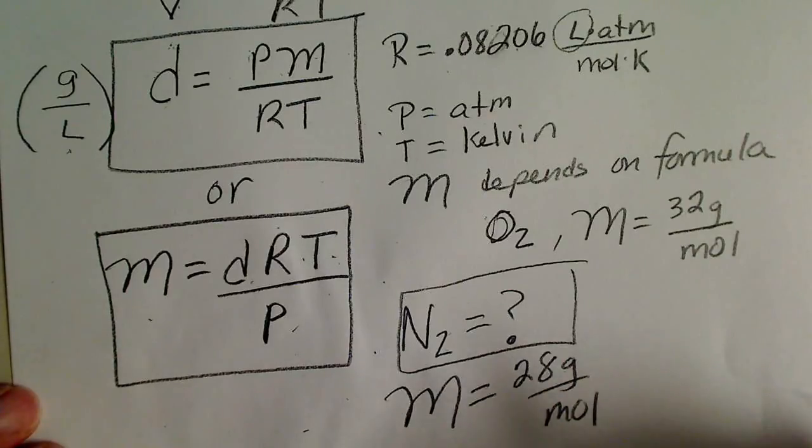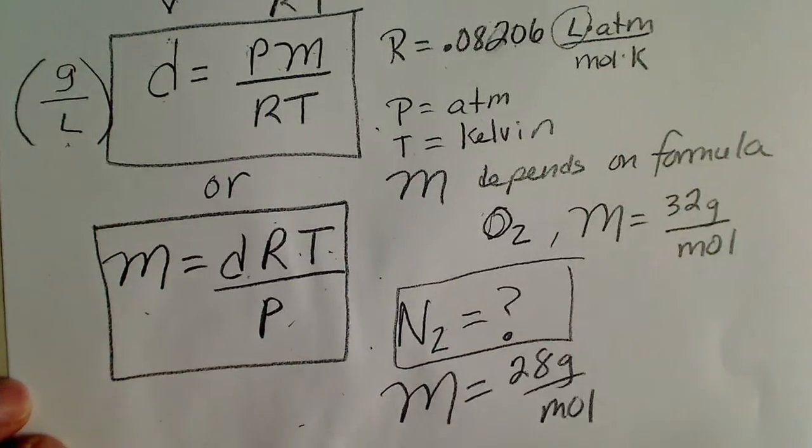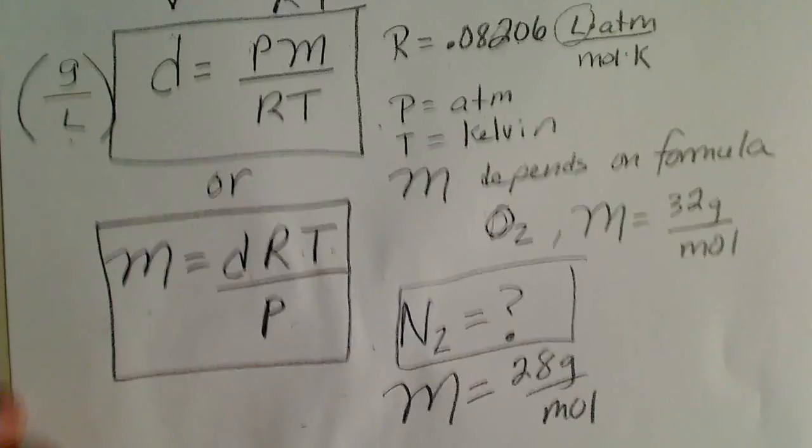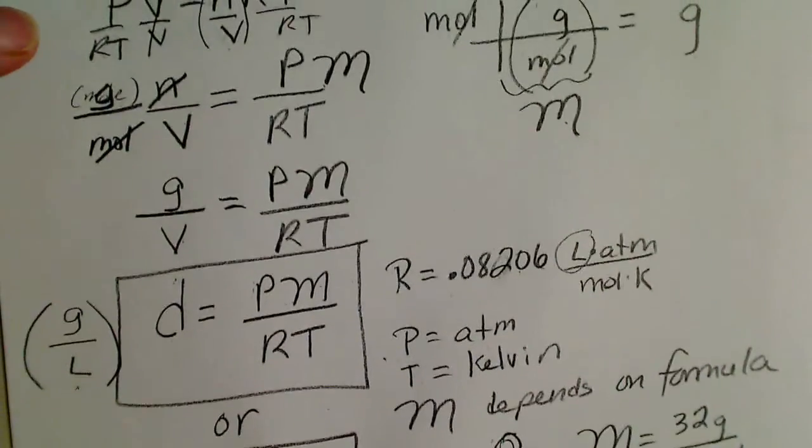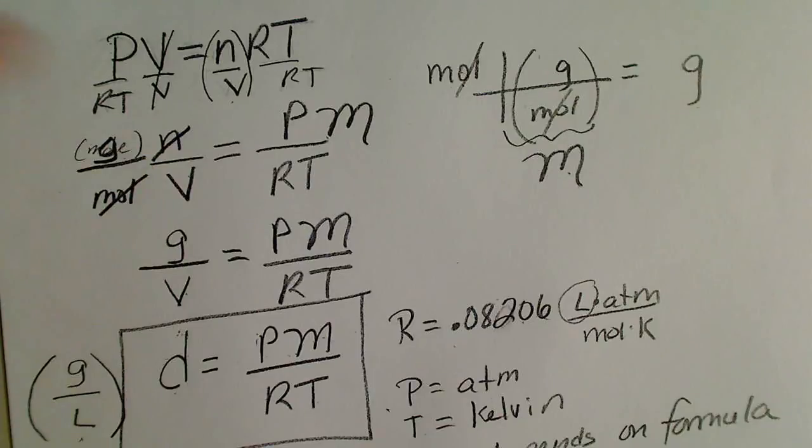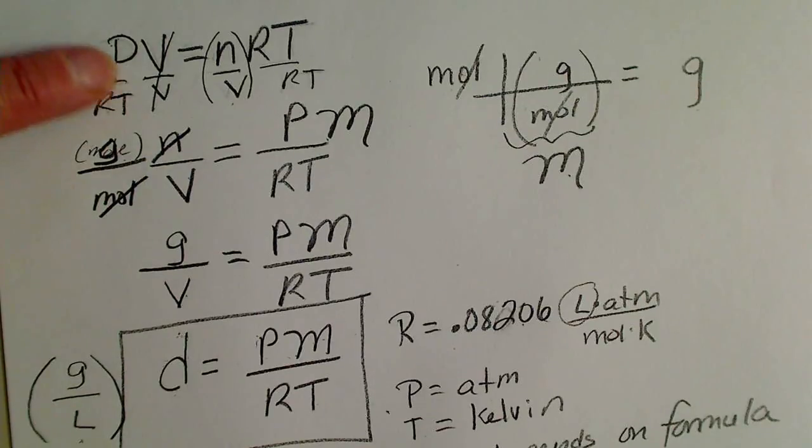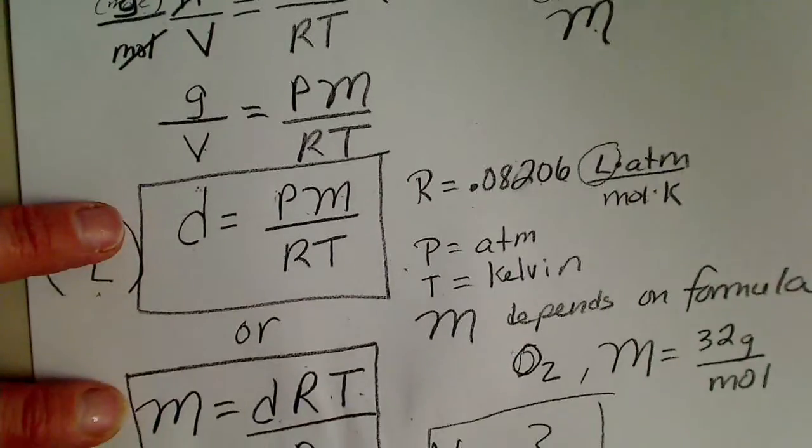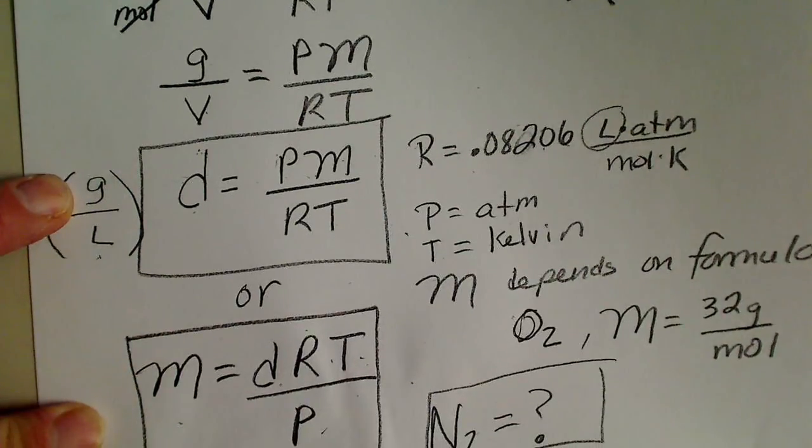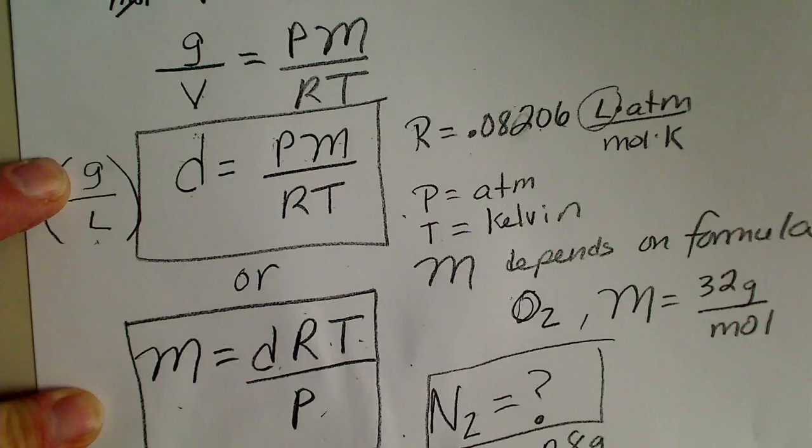But since nitrogen does weigh 28 grams per mole, that would definitely be a possibility. But for the most part, these equations, because density and molar mass and molarity, moles per volume, are related, the ideal gas law just gives us two more simple formulas that may be useful in determining the properties of a gas.